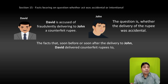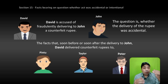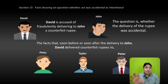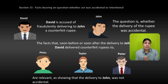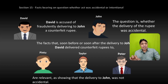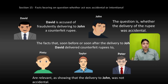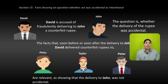Another example: David gave counterfeit notes (नकली पैसे) — he gave fake notes to Pintu, to Taylor, and to Peter as well. So all these transactions become relevant, showing that the delivery to John was not accidental. If David had only given fake notes to John, it could perhaps be considered accidental, but since he gave fake notes to Pintu, Taylor, and Peter before giving to John, these facts become relevant to prove that David intentionally gave John counterfeit notes to frame him.